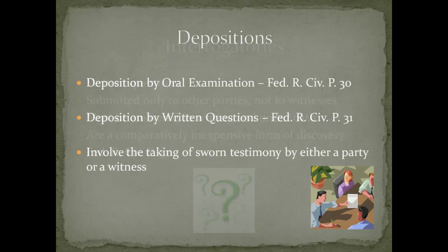Speaking of depositions, there are two main types: deposition by oral examination and deposition by written questions. These are provided for in Rules 30 and 31, respectively, of the Federal Rules of Civil Procedure. Depositions involve taking the sworn testimony of either a party or a witness prior to trial.